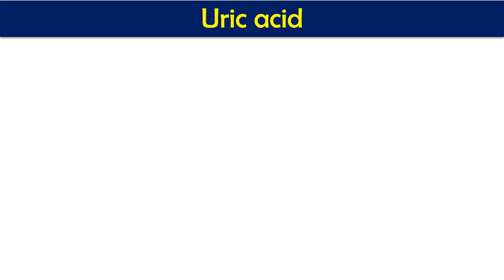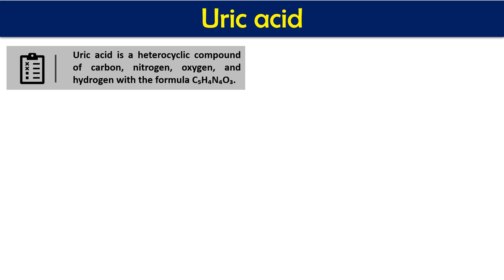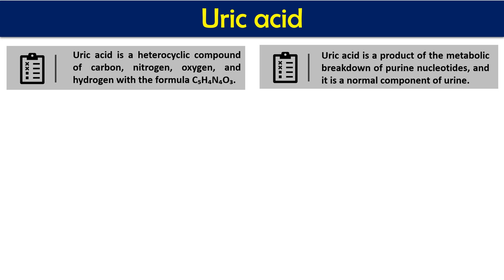First we should understand what uric acid is. Uric acid, if you look at its structure, is a heterocyclic compound containing carbon, nitrogen, oxygen, and hydrogen with the formula C5H4N4O3. It is a byproduct of the metabolic breakdown of purine nucleotides and is a normal component of urine. In our DNA or RNA we have purines and pyrimidines, and whenever we metabolize purines — adenine and guanine — we get uric acid as a byproduct.